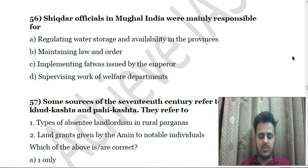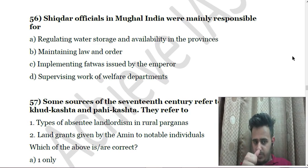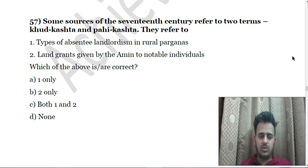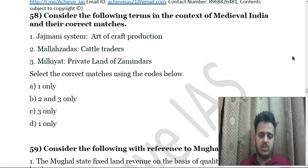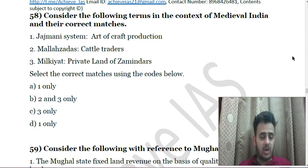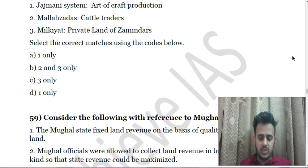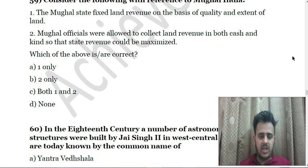Next: Shiqdar officials in Mughal India were mainly responsible for — A. Regulating water storage and availability in the provinces; B. Maintaining law and order and implementing fatwas issued by the emperor; C. Supervising work of welfare departments. Next: Some sources of the 17th century refer to two terms — Khudkashta and Pahikashta — and they refer to — First, types of absentee landlordism in rural parganas; Second, land grants given by a zamindar to notable individuals.